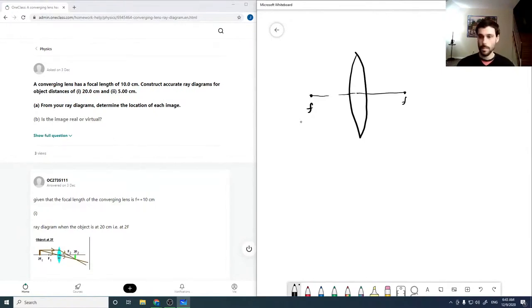Okay, so there's our focal point, which is about 10 centimeters over, and then construct accurate ray diagrams for objects at distances of 20 centimeters. So here's the 20 centimeter object.